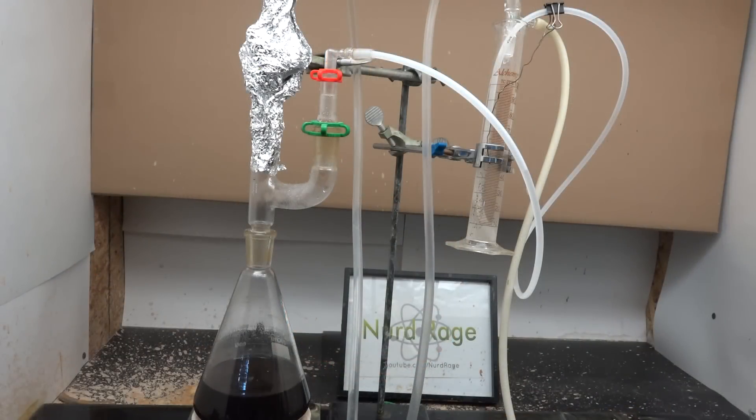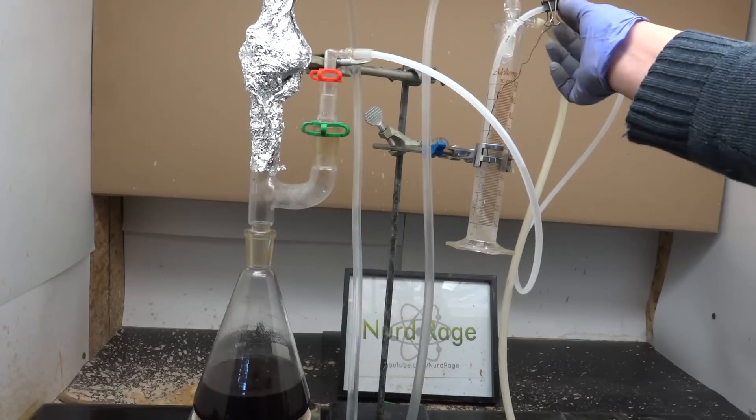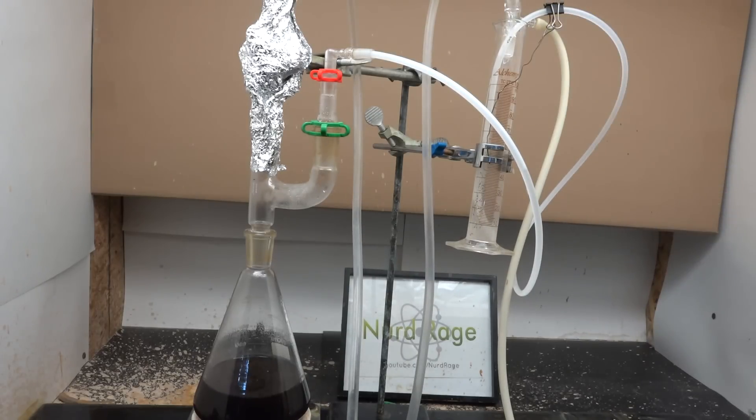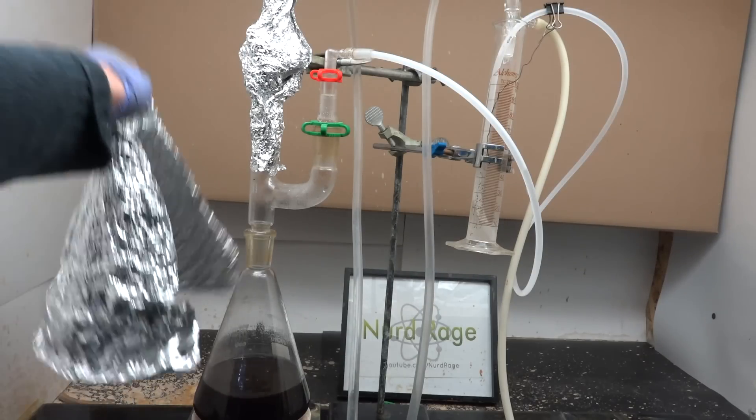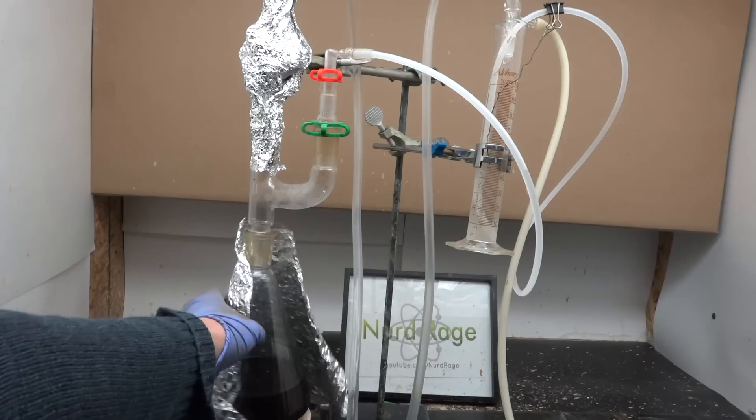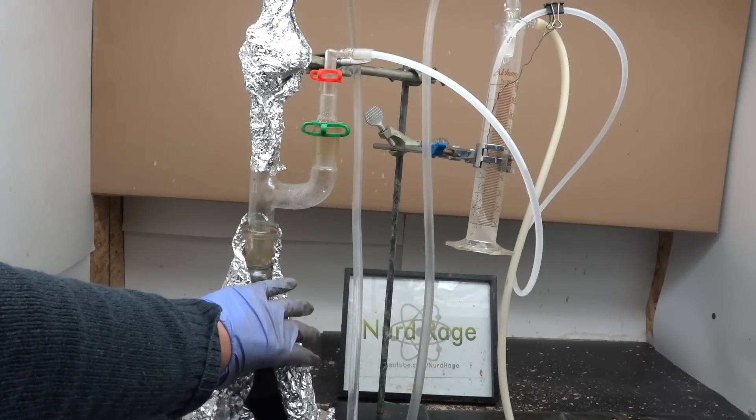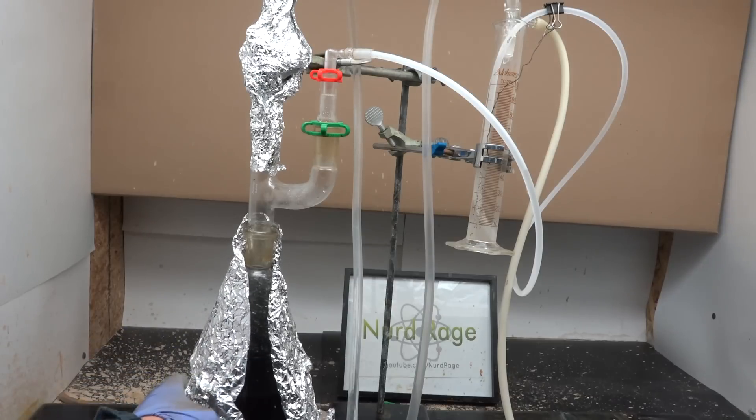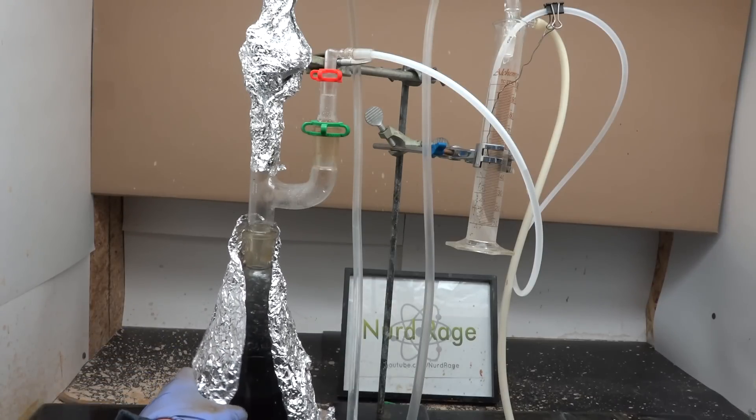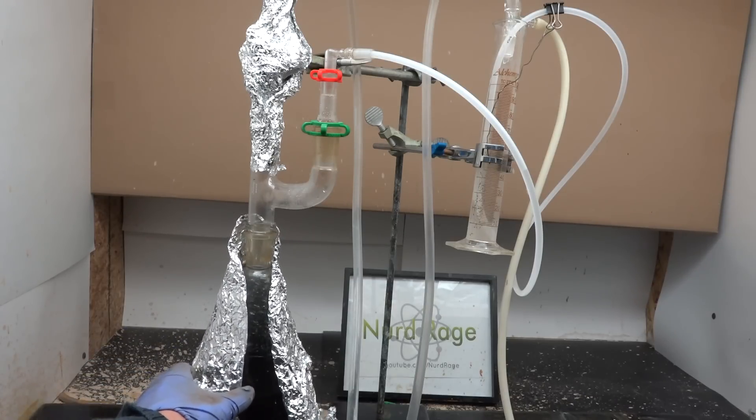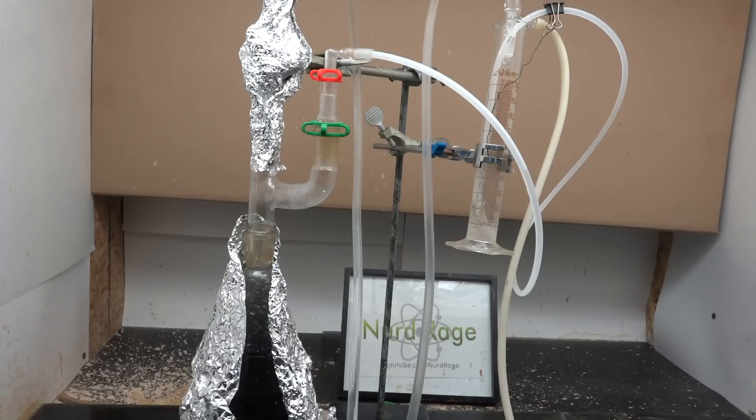Now set up a Dean-Stark apparatus around the flask operating in heavy return mode. I have shown how to make these in a previous video. A traditional apparatus cannot be used because it only returns the lighter fraction but we want to return the heavy fraction. Now chlorotoluene boils at around 160 celsius. To minimize heat loss and make this reaction go faster I'm insulating the hot portions of the Dean-Stark apparatus with foil. Normally I'd insulate more of this but I'm leaving some parts open so you can see the progress of the reaction.